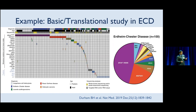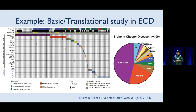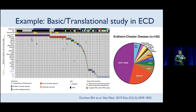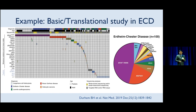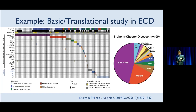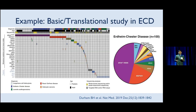One important example of a translational study in Erdheim-Chester disease is the study led by Dr. Durham from Memorial Sloan-Kettering, which looked at mutations in a large cohort of 100 ECD cases. As you can see in the pie chart on the right, beyond the well-known BRAF V600E mutation, we were able to find more novel mutations. That's important because we now have reports of cases being treated with a CSF1R inhibitor and other targeted agents. Just by testing tissue for genetic markers, we were able to figure out what's driving the disease and how to target it.